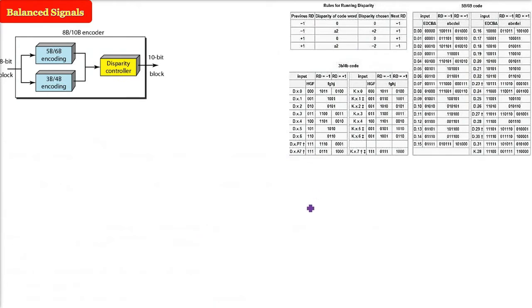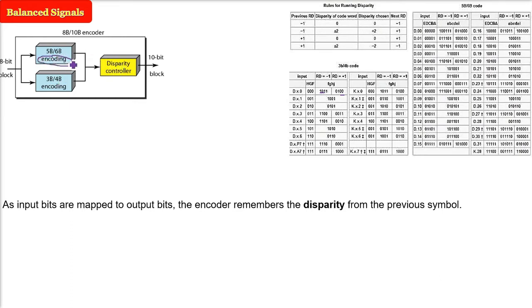So which one will be used - 1011 or 0100? This is assigned based on how the encoder remembers the disparity from the previous symbol. What is disparity?